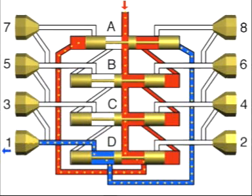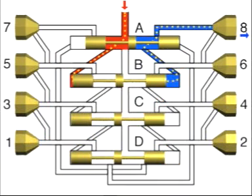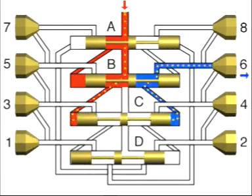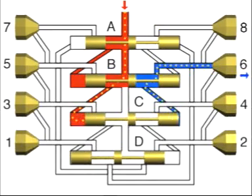In the subsequent distribution sequence, pistons B through D are moved from the left to the right, one after the other. A complete distribution sequence is finished, and a new cycle can begin.